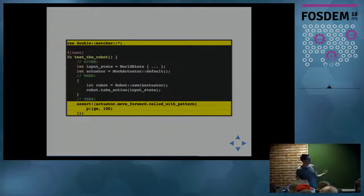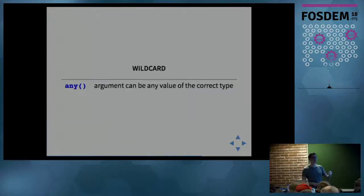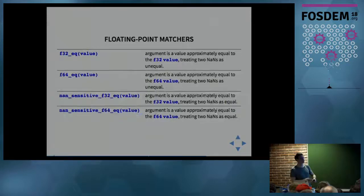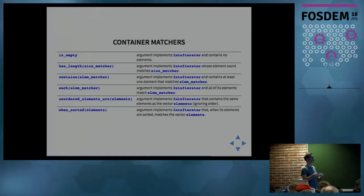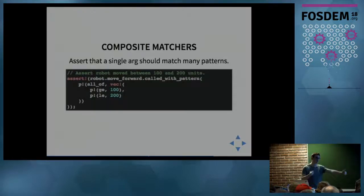There's loads of built-in matchers. There's wildcard matchers if you don't care about specific arguments, comparisons, floating points, string matches, container matches. You can also compose matchers together. Maybe you don't care that the robot moved just more than 100, but that it moved within some range. You can say it matches all of greater than or equal to 100, lower than or equal to 200.